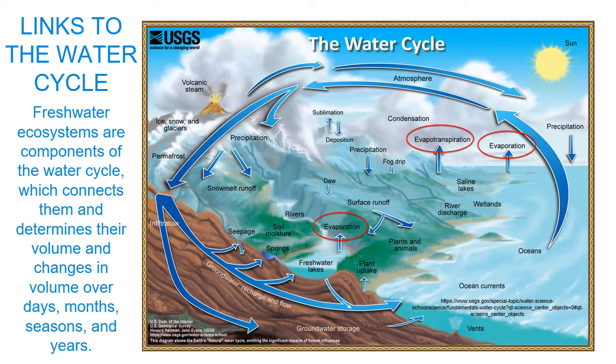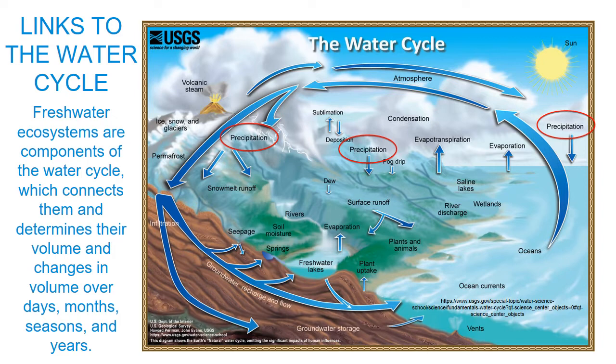Freshwater ecosystems are components of the water cycle, in which water evaporates from oceans, the landscape, and freshwater bodies, and is transported as atmospheric water until raining down on the Earth's surface. Water precipitating on land flows to the ocean again in rivers and aquifers, and is temporarily stored in lakes, rivers, wetlands, and aquifers along the way. Differences in the rates water is added or removed from freshwater ecosystems determines changes in their volume over days, months, seasons, and years. Water is continually being replenished as it makes its way back to the ocean or atmosphere.